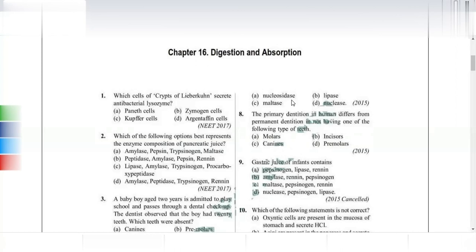Paneth cells secrete the antibacterial enzyme lysozyme. The crypts of Lieberkühn are present in the intestinal mucosa, and the Paneth cells in that location will be producing lysozyme.